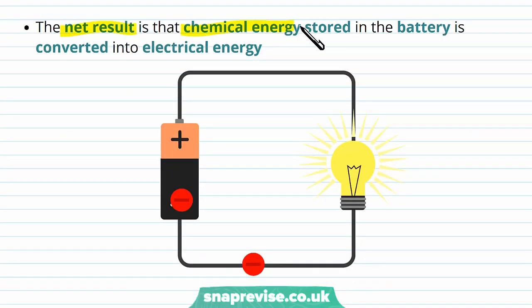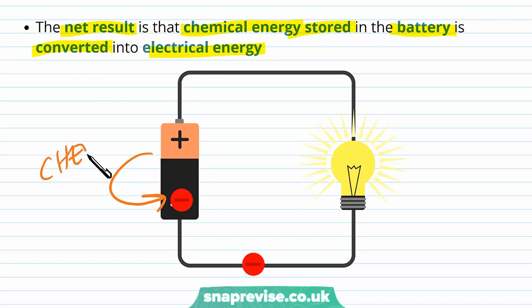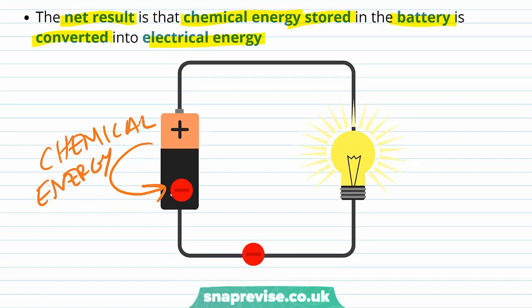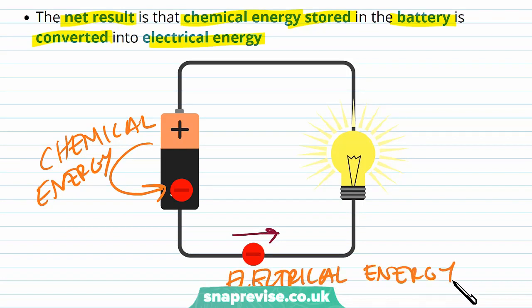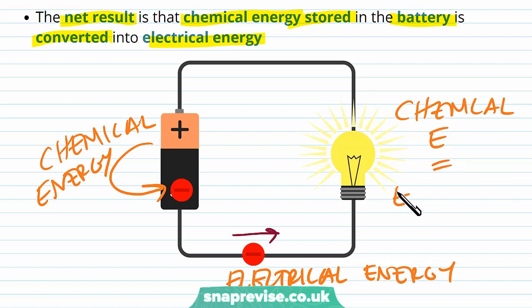The net result is that chemical energy stored in the battery is converted into electrical energy. This battery contains chemical energy that it transfers to the electron, and this electron moving around the circuit carries electrical energy. So the chemical energy from the battery is transferred to electrical energy, and then this electrical energy is transferred to the lamp which converts it to light energy and heat energy. So we've got lots of energy transfers going on here.